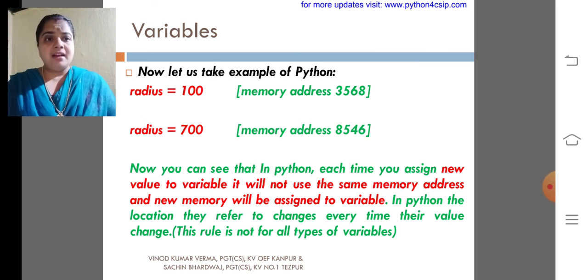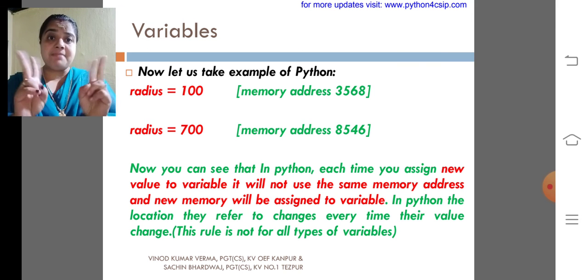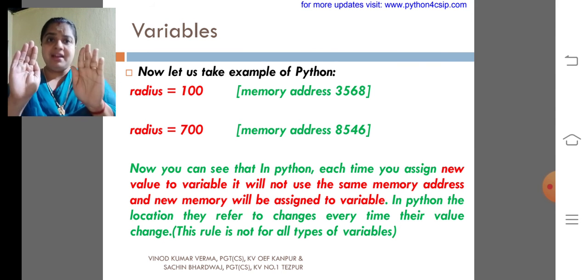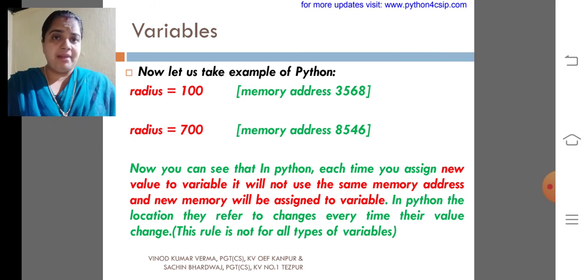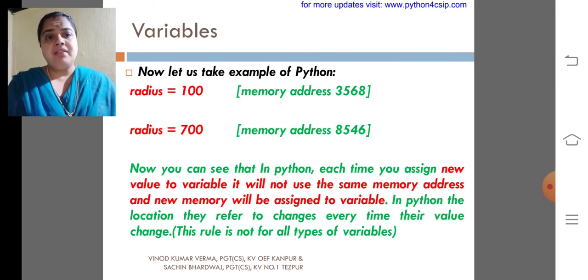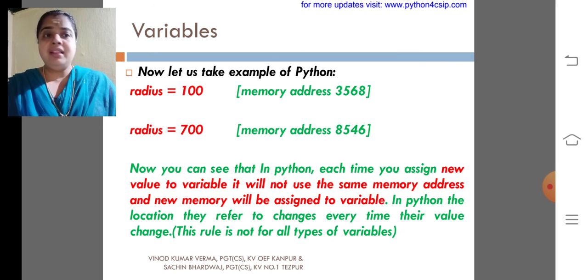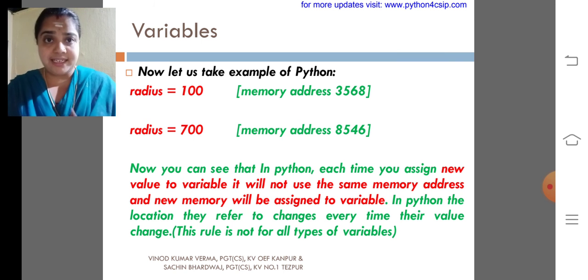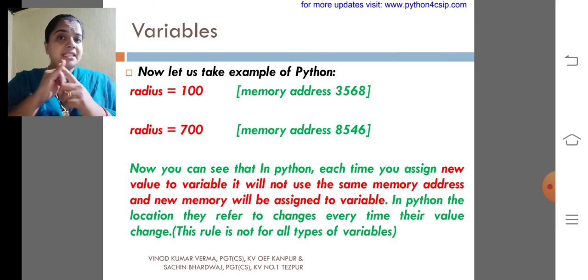So what happens here? The variable will use different memory addresses. For 100 it will use a memory address, for 700 it will use another memory address. In Python, location, they refer to change every time their value change. The rule is not for all the data types of variables.